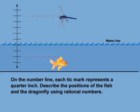Let's look at another example. On the number line, each tick mark represents a quarter inch. Describe the position of the fish and the dragonfly using rational numbers. With this vertical number line, the water line is the zero mark. We are told that each tick mark represents a quarter.